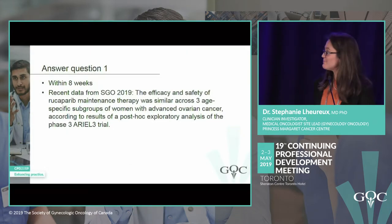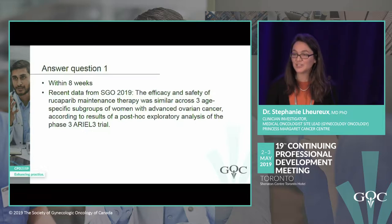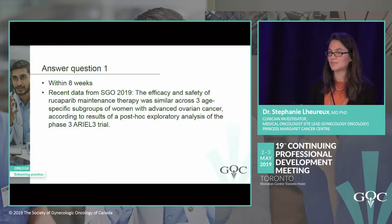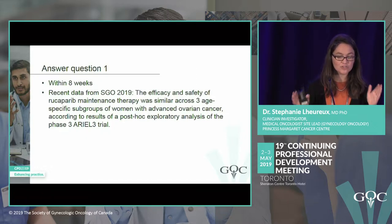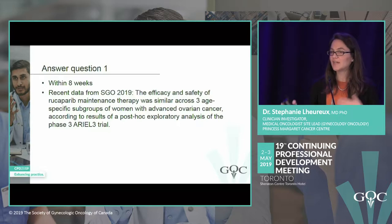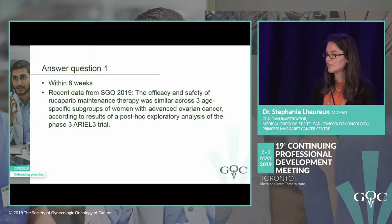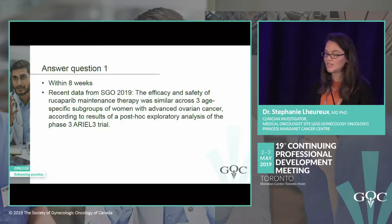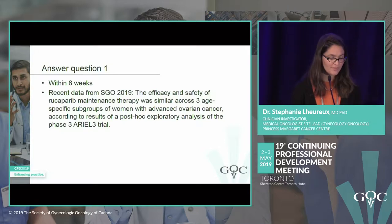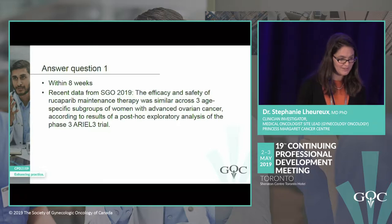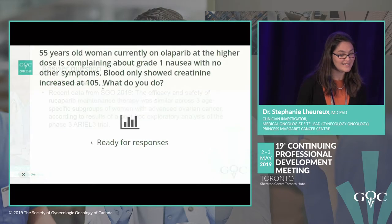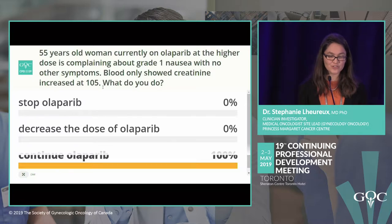The answer is within 8 weeks, because all trials built with olaparib maintenance start within 8 weeks. We need to keep to this 8-week window. Regarding older patients, a recent SGO presentation showed that all patients benefit from PARP inhibitors regardless of age, with comparable efficacy and safety across different age groups.